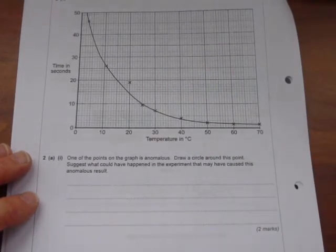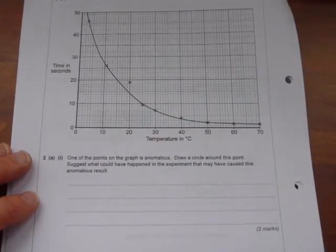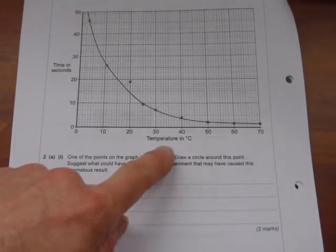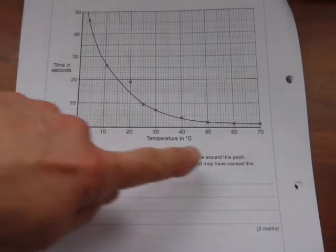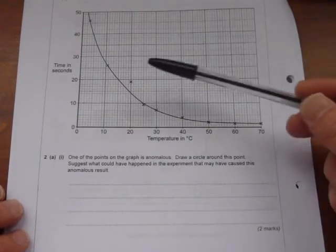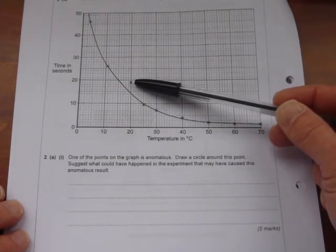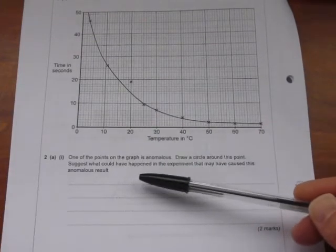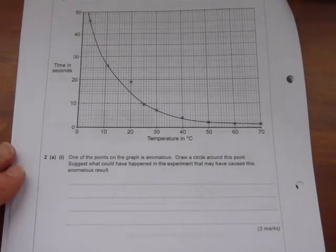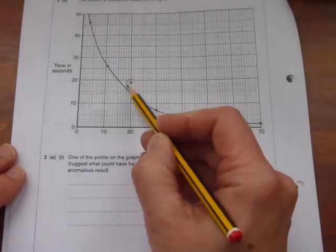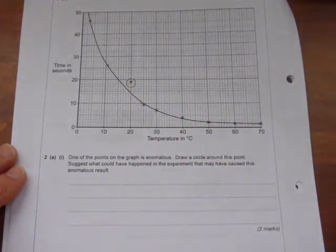Here now is a typical exam question, showing the graph of changing temperature, the independent variable, and the time it took for the cross to disappear. You'll see that it's a smooth curve, but there is one point that doesn't fit the curve. Very common question. It says: one of the points on the graph is anomalous. Draw a circle around this point. Suggest what could have happened in the experiment that may have caused this anomalous result. This is worth two marks. One mark will be for doing what it says, circling the anomalous point.